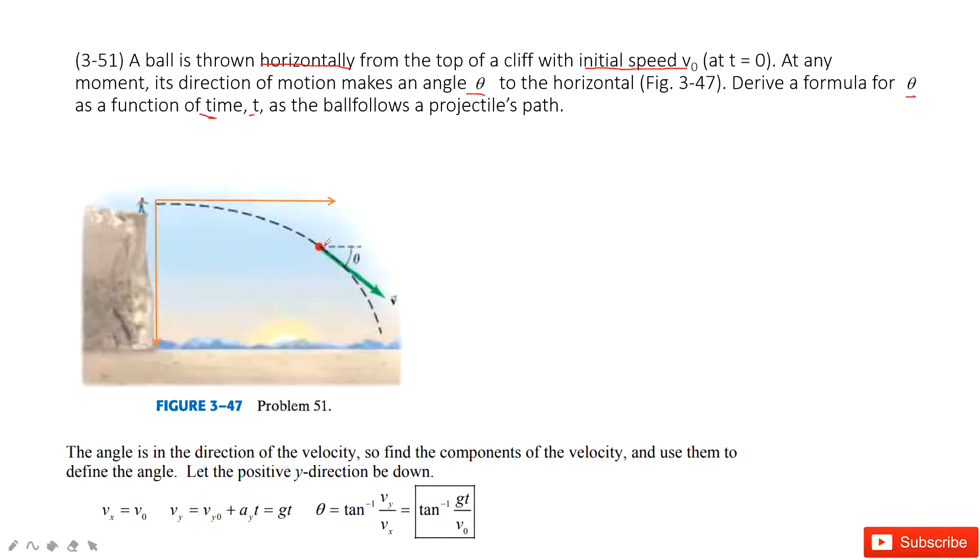We know the velocity at x component is constant, v0. And then, what is the velocity at the y component? We need to consider. We know the initial velocity at y component is 0. The acceleration is due to gravity, so it's g.